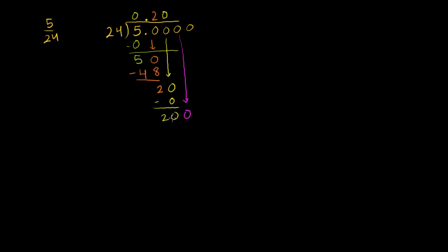24 goes into 200. Let's see. 8 times? Maybe 9 times? It's 180. No, it'll be 8 times, I believe. Let's see if 8 times works. There's always a little bit of an art to this. If this is too little, we might have to increase it. 8 times 4 is 32. 8 times 2 is 16, plus 3 is 19. No, that was right. 8 times. 200 minus 192, that's 8. Bring down another 0.